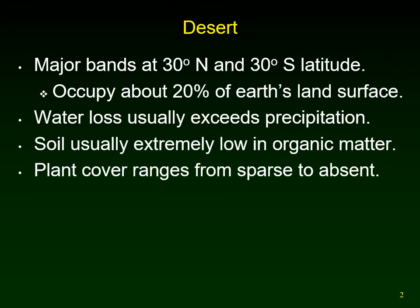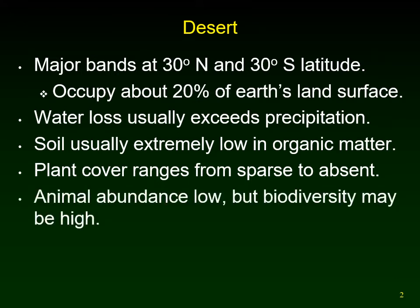Plant cover can be absent or sparse because there's only limited water, so plants need enough space — they will out-compete each other if they're too close. Animal abundance is low, meaning you don't have huge herds in the desert, but you have quite a variety. So you can have high biodiversity with many different species, but not necessarily large populations of anything.